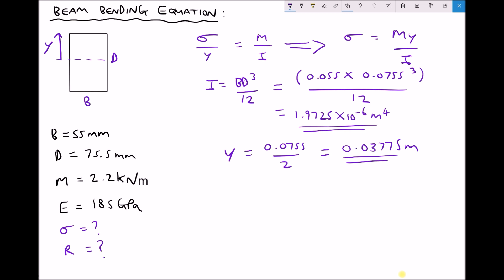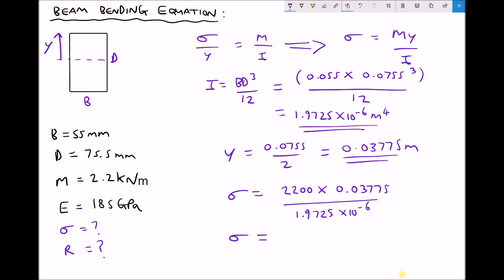Now we can input our numbers into our formula. Sigma equals bending moment M, which is 2.2kNm or 2200 Newton metres, multiplied by y of 0.03775, divided by I of 1.9725 times 10 to the minus 6. Running that through the calculator gives sigma equal to 42,103,929 Pascals, or expressed in megapascals, a stress equal to 42.1 MPa.